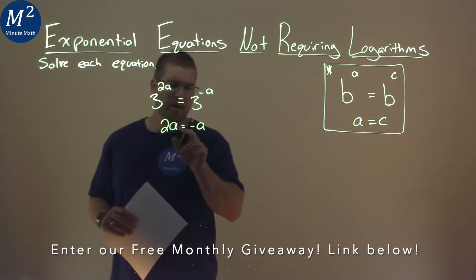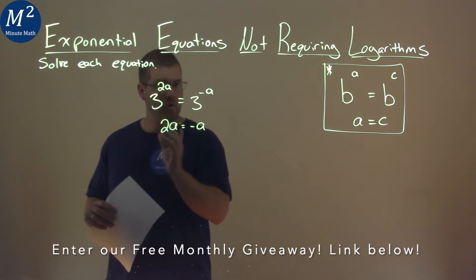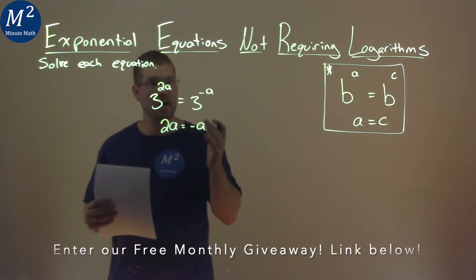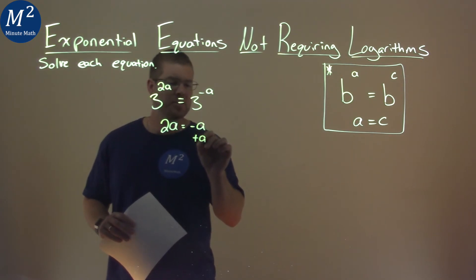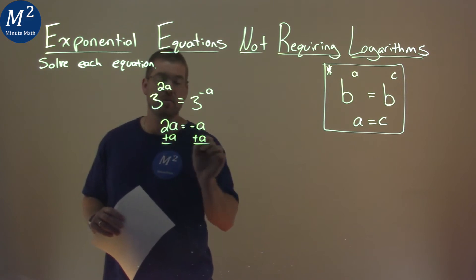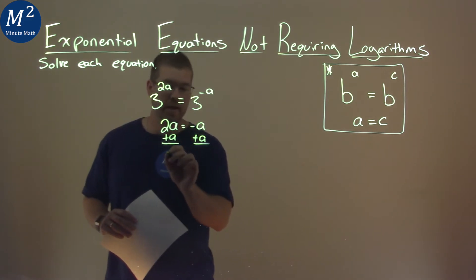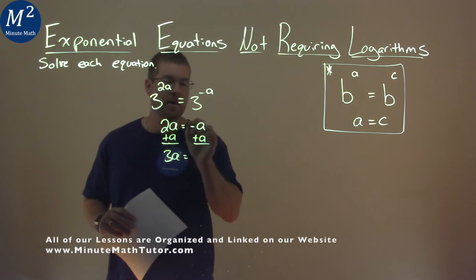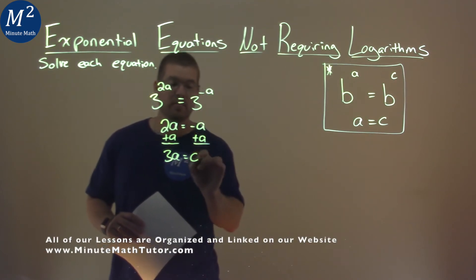We have a negative a and a 2a. To bring that a over to the left-hand side to combine the like terms, I'm actually going to add an a to both sides. 2a plus 1a is 3a, and negative a plus an a is 0.